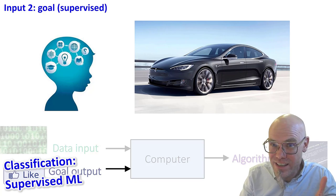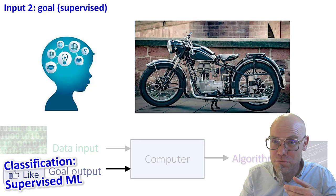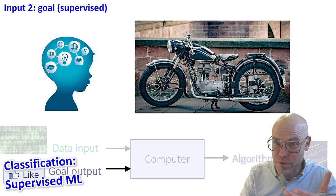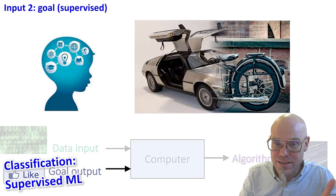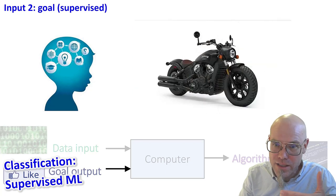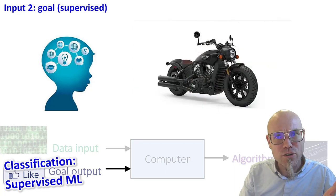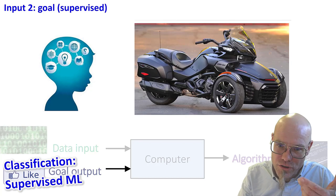We show the machine, this thing here, and we say, that's a car. Then we show the machine, this thing here. And we say, well, that's a motorcycle. And then we show this thing here and say, well, it is a car. And then we say, well, this here is a motorcycle. And then we show the machine, this one here,